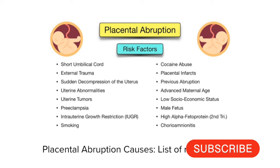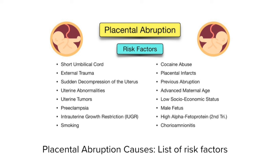Abdominal trauma during pregnancy is also a risk factor — this may include car accidents or falls onto the stomach. Smoking increases the chances of placental abruption, as does alcohol use during pregnancy, multiple gestation, having a male fetus, preeclampsia, and excess amniotic fluid.